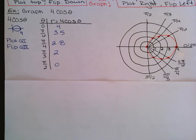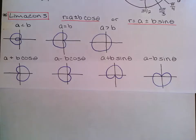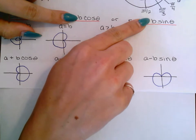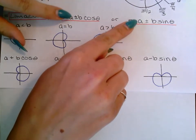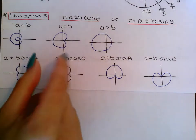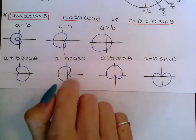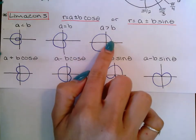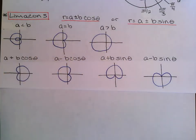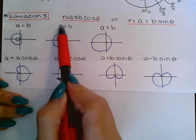Our next shape is called a limaçon. These equations have two different numbers: a number plus or minus another number being multiplied by the trig function. If I take away the beginning portion I have the circle formula — a number times the trig function — and I'm just adding or subtracting a number in front. Limaçons work kind of like a circle that got shifted; one of the sides, depending on the ratio between A and B, starts to pinch inward and can even make a loop inside.